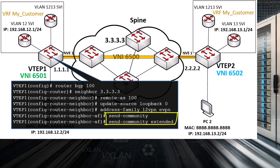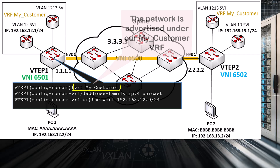There's one more piece of configuration to bring it all together: under our BGP configuration, we advertise the network on which PC1 resides. This way, both the spine switch and VTEP2 will learn about that network. And that's all of the configuration on VTEP1.